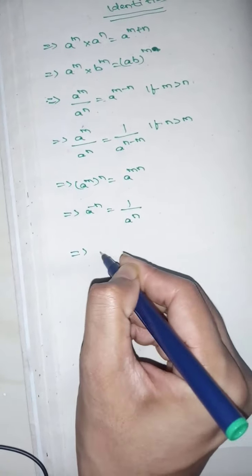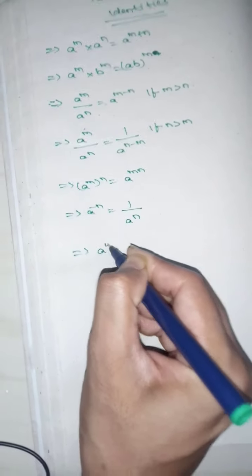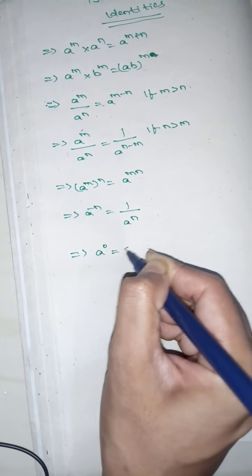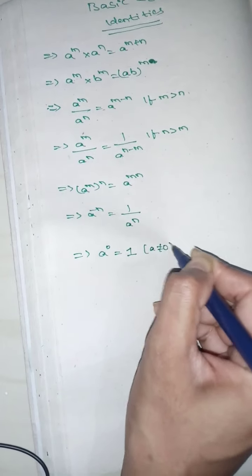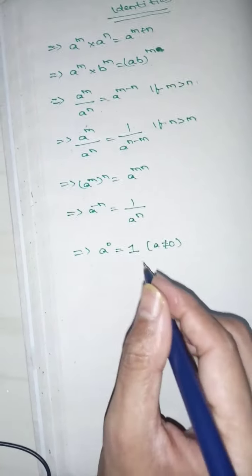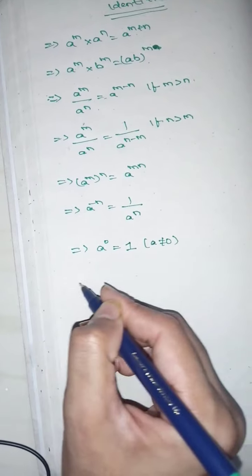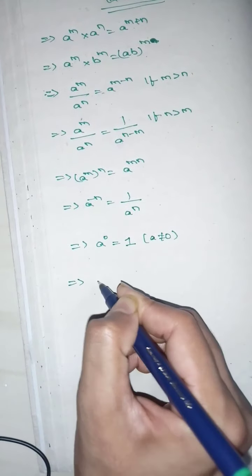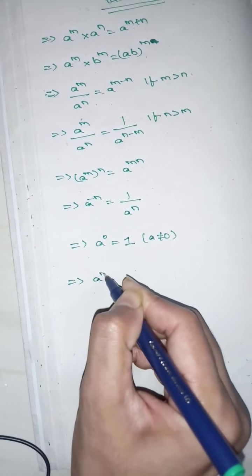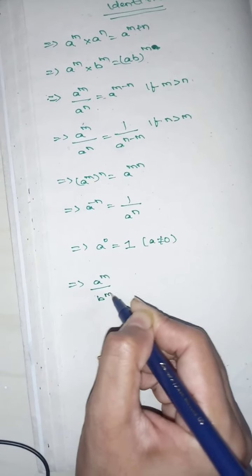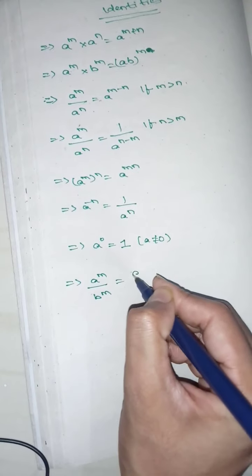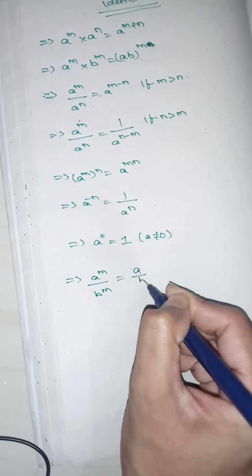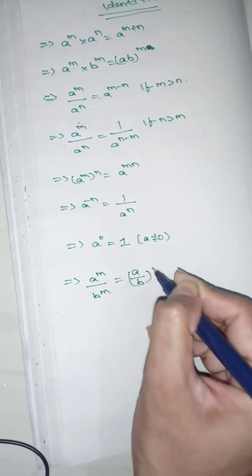Then a to the power of 0 is equals to 1, provided a is not equals to 0. Also, a power m by b power m is equals to a by b, whole power m.